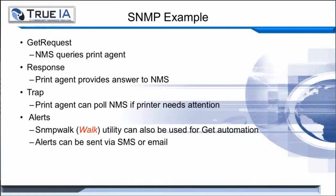As an example of how SNMP works — for instance, with a printer — the management system will send a query to the print agent. That agent will provide an answer back to the management system. And the trap is the print agent's resultant poll that the management system needs if the printer needs attention.